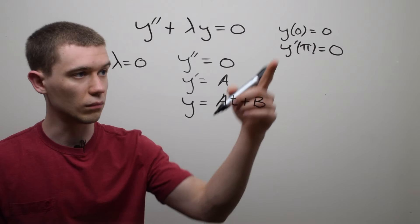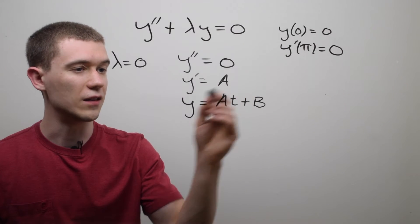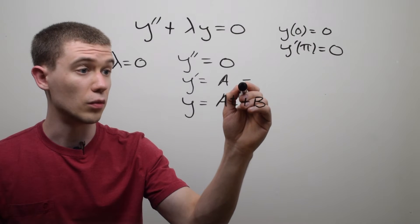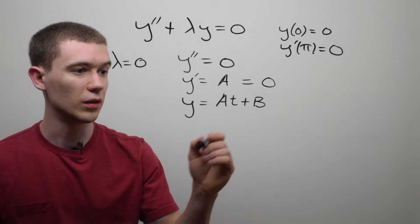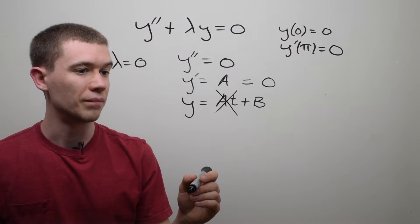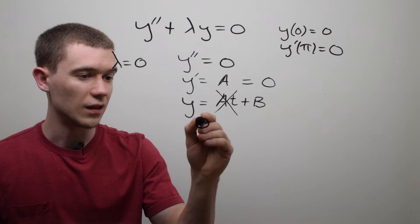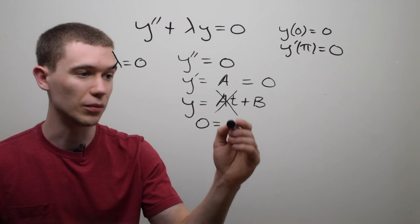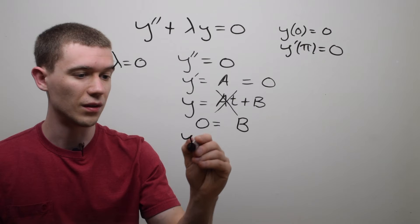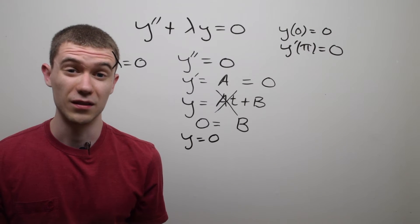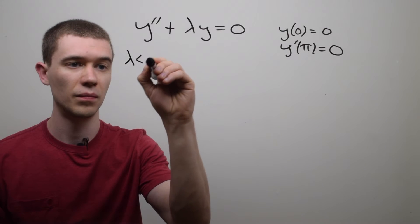At this point I can figure out the entire solution because I know the initial conditions. Looking at y'(π) = 0: if I plug π into the y' equation, there's nothing to substitute, so a = 0. That means the at term drops out. Then using y(0) = 0, plugging in 0 for t gives b = 0. So if a and b are both zero, y = 0 — a trivial solution. So when λ = 0 we get a trivial solution.